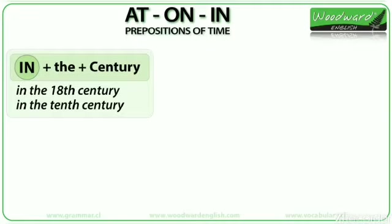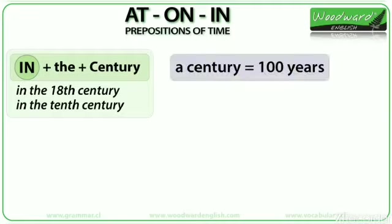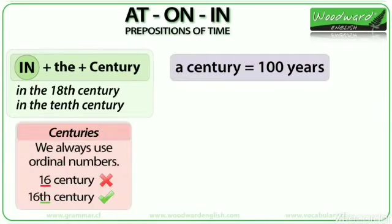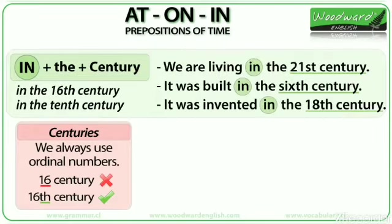The preposition in is also used with centuries. A century is 100 years. We say in the 18th century, in the 10th century. We use ordinal numbers when referring to centuries — we say 16th century. Notice we also use the article the before the number. Examples: We are living in the 21st century. It was built in the 6th century. It was invented in the 18th century.